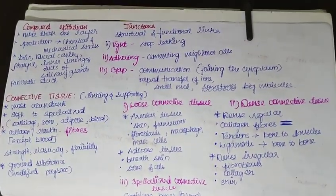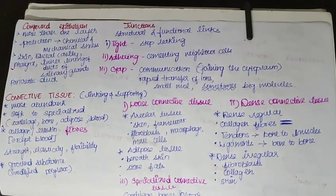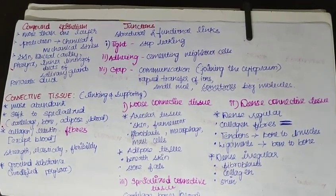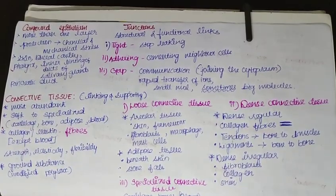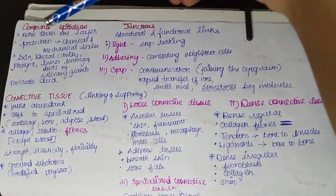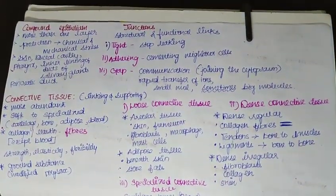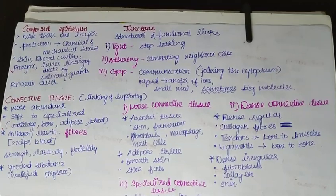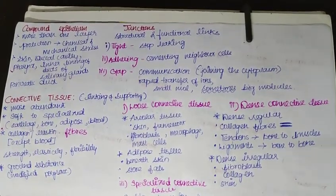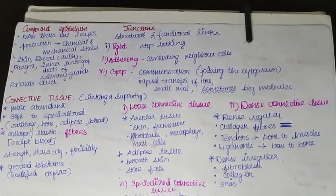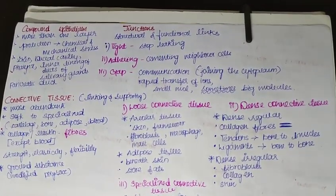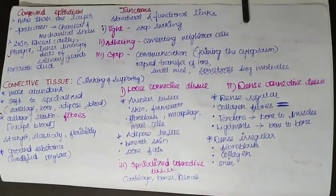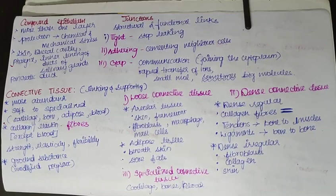Compound epithelium is generally made up of more than one layer. Since it is made up of more than one layer, it will obviously be thick and it can protect us. So the function of compound epithelium will be protection against chemical and mechanical stress. It is generally found in skin, buccal cavity, pharynx, inner lining of ducts of salivary glands, and also in the pancreatic ducts.